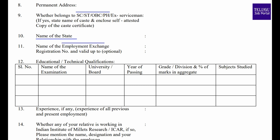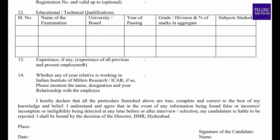In the next section, you can enter the registration number and valid date to get the education qualification information. The job requires 10th, inter, and degree qualifications. The board name, percentage, and subjects are needed. Job experience information must also be provided in the relevant fields.